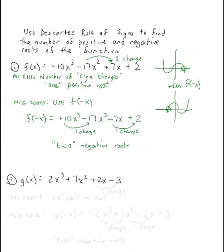So we can take a look at a second function. Our g of x is two x to the third plus seven x squared plus two x minus three. Again, I'm interested in those sign changes.